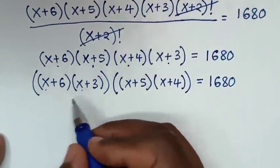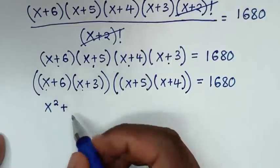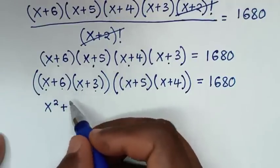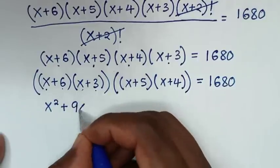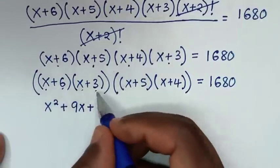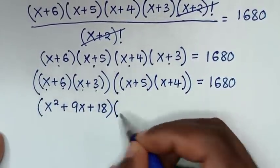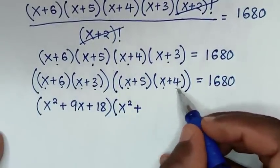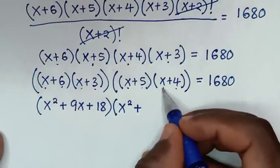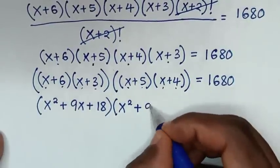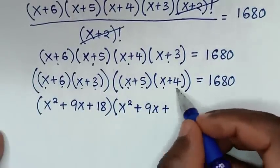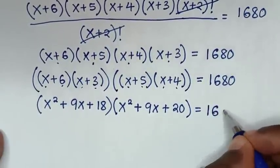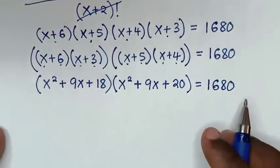Expanding each pair: (x+6)(x+3) = x²+3x+6x+18 = x²+9x+18, and (x+5)(x+4) = x²+4x+5x+20 = x²+9x+20. So we have (x²+9x+18)(x²+9x+20) = 1680.